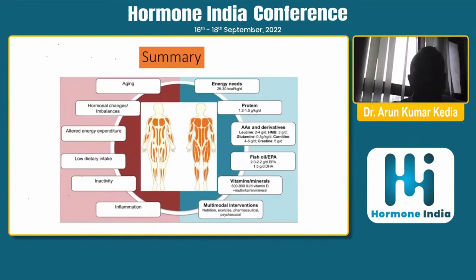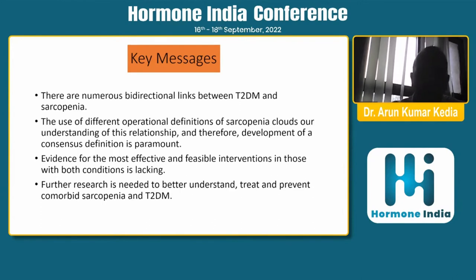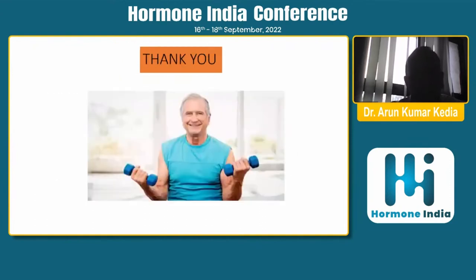To summarize: on one hand we have aging, hormonal imbalance, low dietary intake, inactivity, and chronic inflammation in diabetes. We must address energy needs, protein requirements, amino acids, essential fatty acids, and vitamin and mineral supplementation through multimodal interventions. The key messages are: there is a bidirectional link between type 2 diabetes and sarcopenia; there are different operational definitions of sarcopenia; evidence for effective interventions in both conditions is still lacking; and further research is needed to better understand, treat, and prevent comorbid sarcopenia and type 2 diabetes. Keep exercising until we find better solutions for sarcopenia in the future.